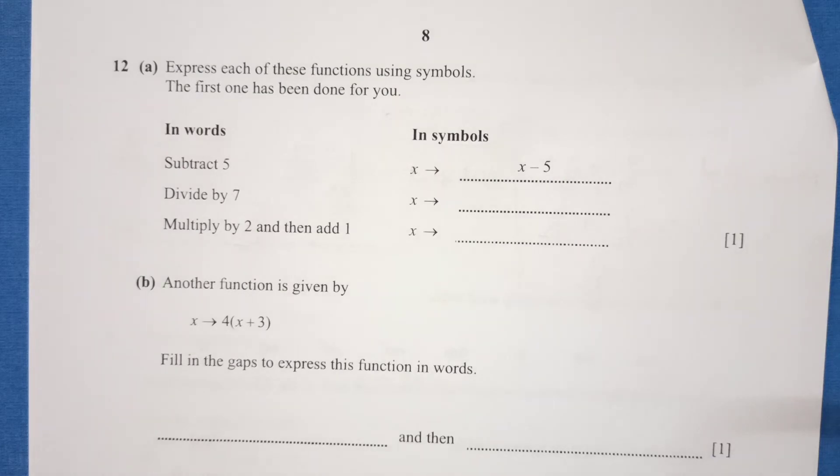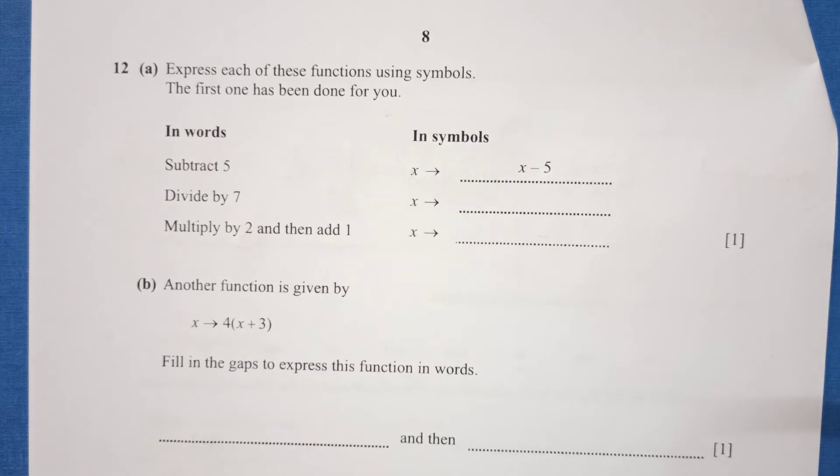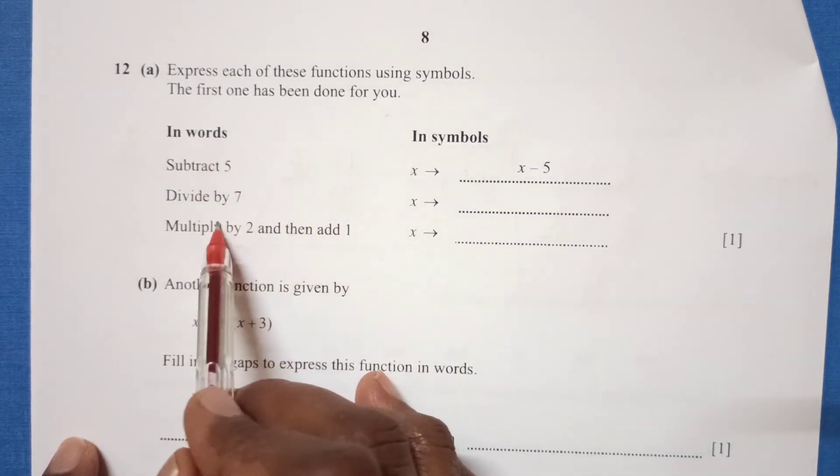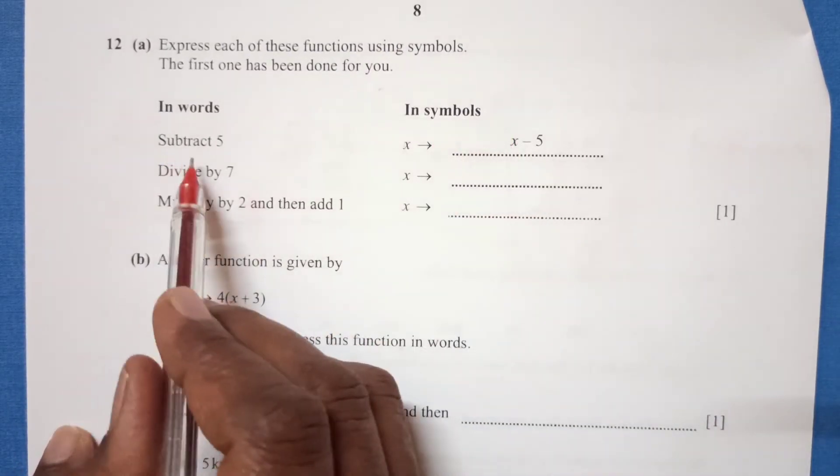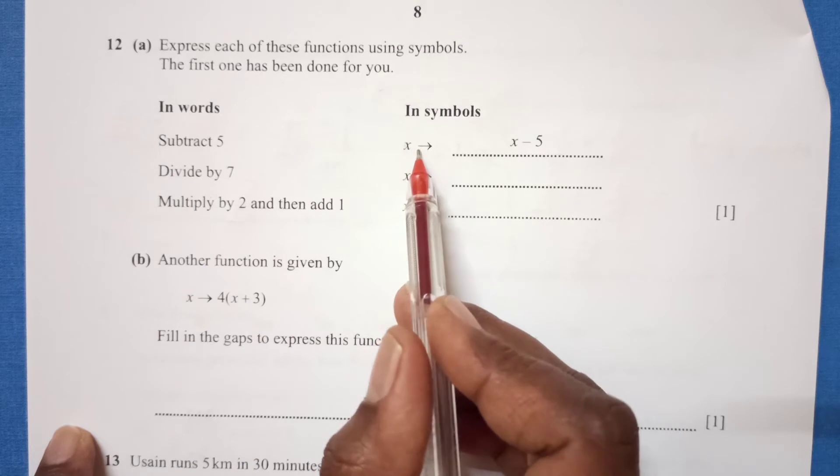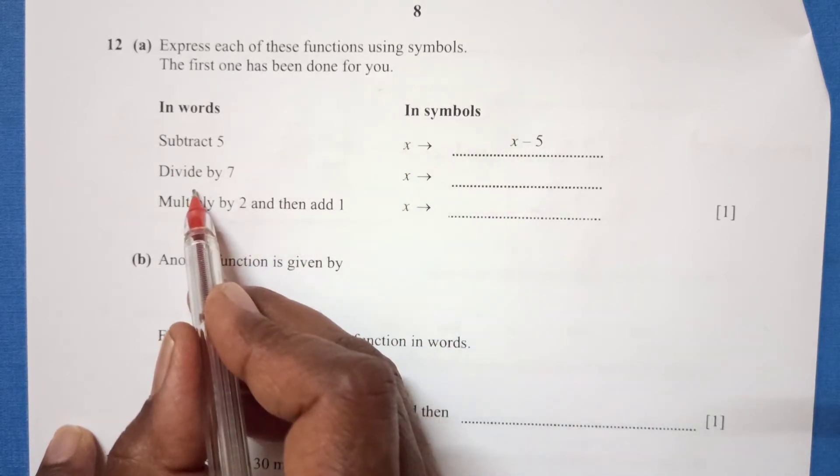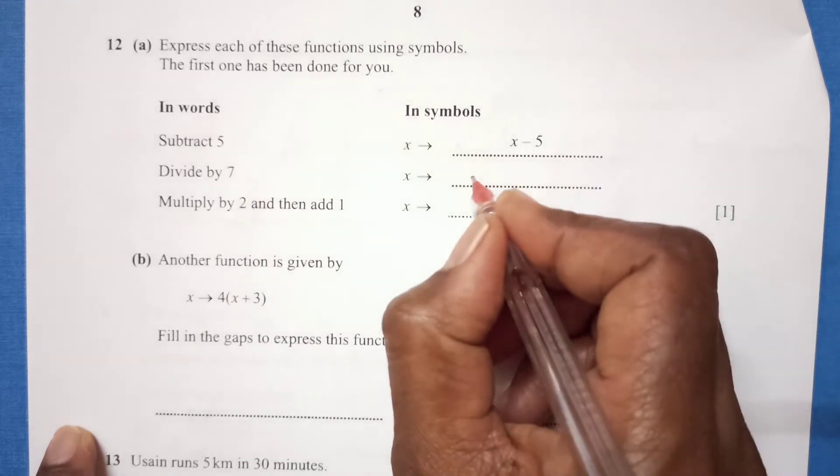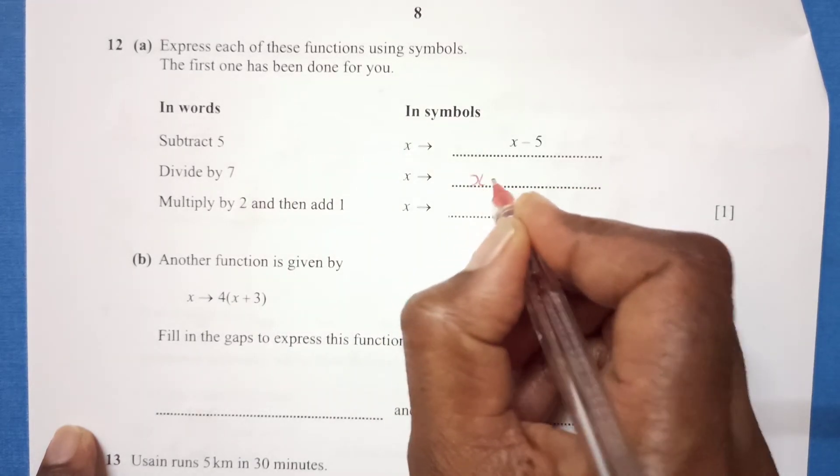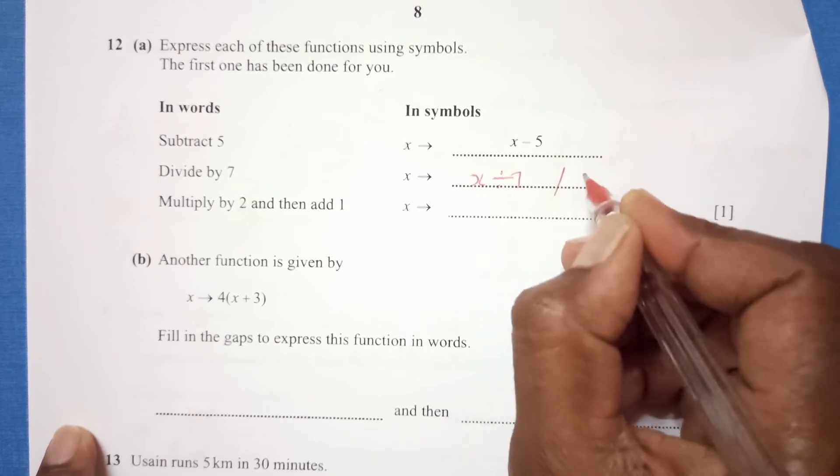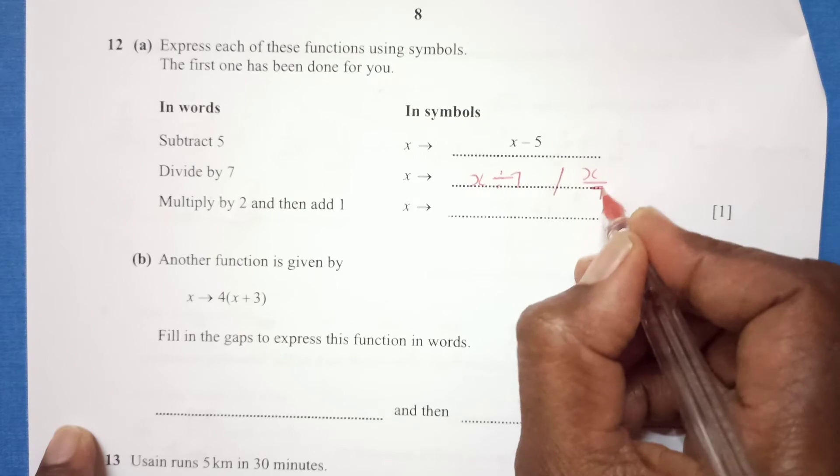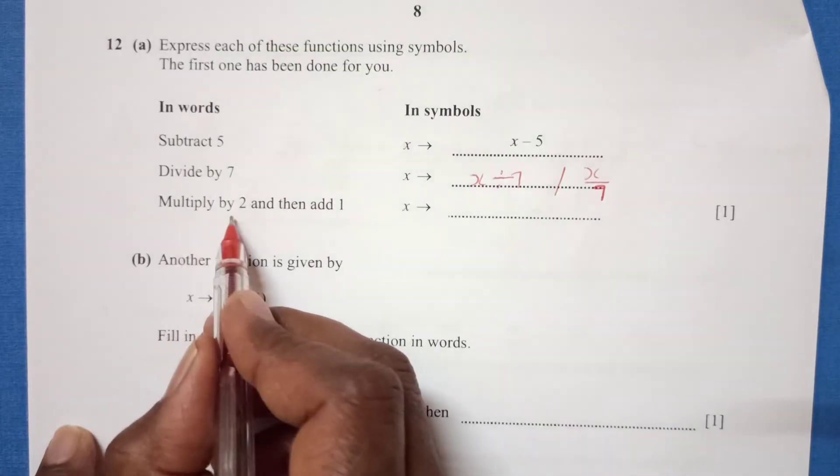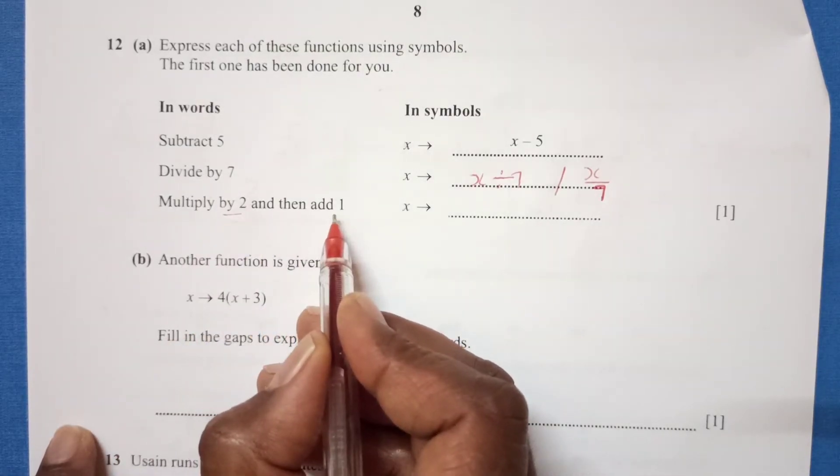Question 12, part a: Express each of the functions using symbols. Subtract 5 from x: x minus 5. Divide by 7: x divide by 7, or you can write x over 7. Multiply by 2 then add 1: 2x plus 1.